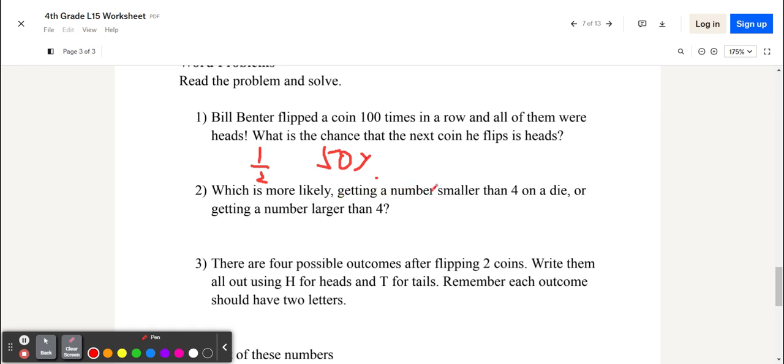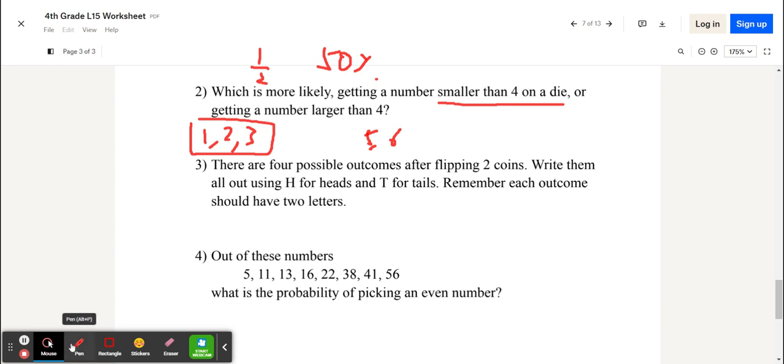And which is more likely? Getting a number smaller than 4 on a die, or getting a number larger than 4? It's going to be smaller than 4. Because there are 1, 2, 3, these are all smaller than 4. But the numbers larger than 4 are just 5 and 6. So, there are more of these options. So, it is more likely, since the chances are all even.